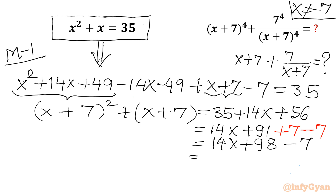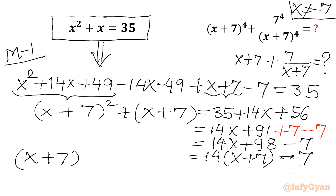After regrouping, the RHS becomes 14x + 98 - 7. Since 14 is common, we factor to get 14(x+7) - 7. So the left hand side is (x+7)² + (x+7), and the right hand side is 14(x+7) - 7.